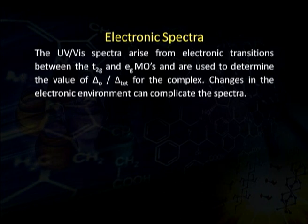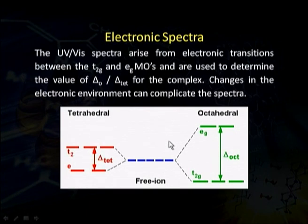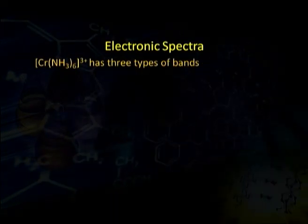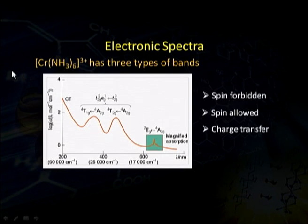Changes in the electronic environment can complicate the spectra because the environment of the T2g orbitals is different from that of the Eg orbitals. Both octahedral and tetrahedral fields are split according to their ligand field geometry. Here is an example of the chromium hexaammine complex. It has three types of bands: one spin forbidden, the second spin allowed, and the third a charge transfer band. The smaller one is the spin forbidden band.